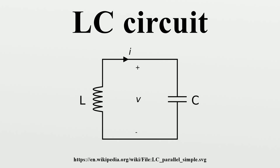The two-element LC circuit described above is the simplest type of inductor-capacitor network. It is also referred to as a second-order LC circuit to distinguish it from more complicated LC networks with more inductors and capacitors. Such LC networks with more than two reactances may have more than one resonant frequency. The order of the network is the order of the rational function describing the network in the complex frequency variable S. Generally, the order is equal to the number of L and C elements in the circuit and in any event cannot exceed this number.